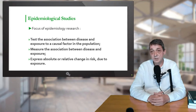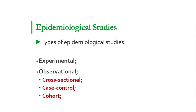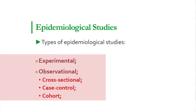The estimation of sample size will be explained later in the course. Although a survey could generally be classified as a study, it is excluded from epidemiological studies because it misses the comparison and required analysis, and involves only the description of information. There are four main types of epidemiological studies: experimental studies, cross-sectional studies, case control studies, and cohort studies.